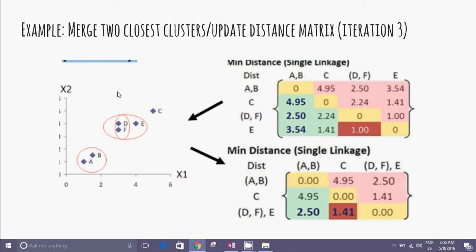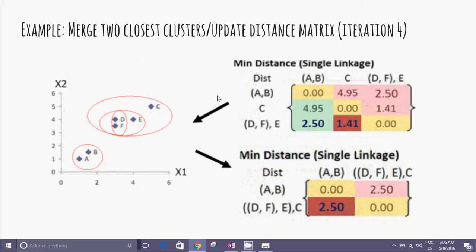That forces us to now calculate the new distance matrix in the third iteration, and find that new minimum.